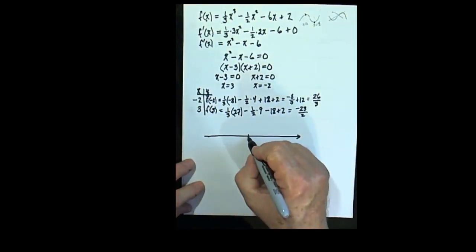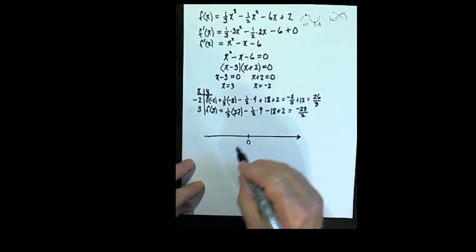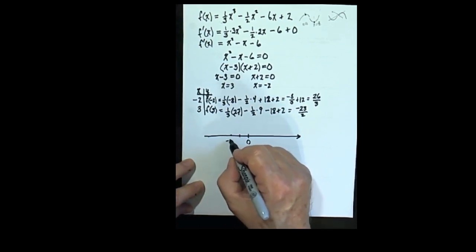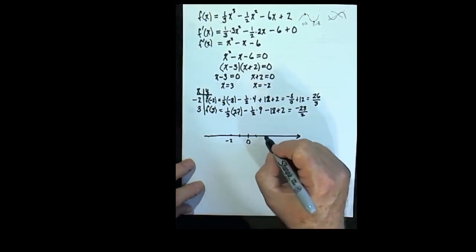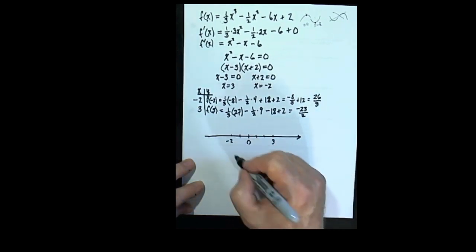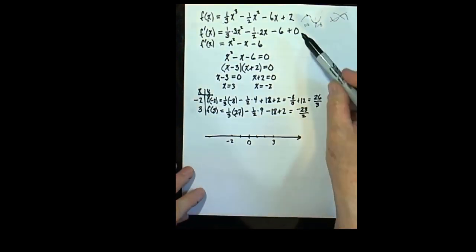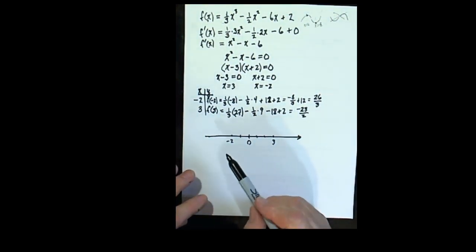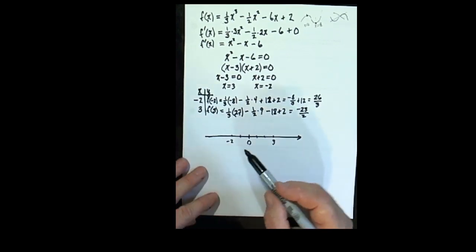Think about the x axis. Let's say that this is where 0 is. We know that negative 2 is a critical value. And we know that 3 is a critical value. We know that it levels off at those two places. Even if we didn't know that this was the shape of the curve, we can find from the derivative what the shape is.